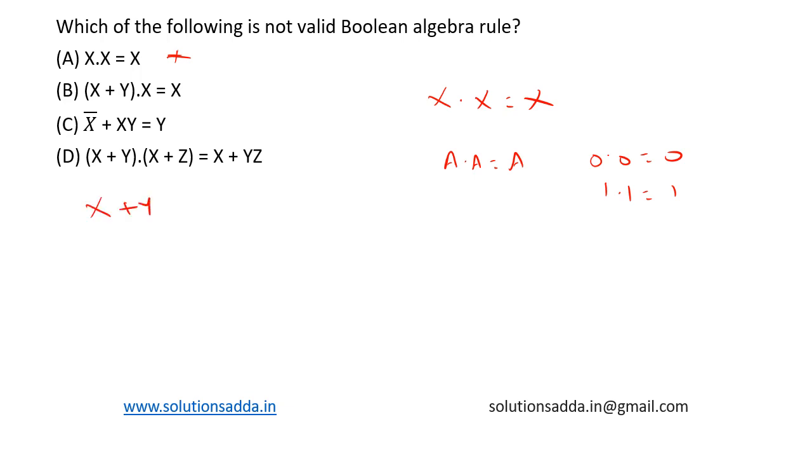Second option is X plus Y into X is equal to X. Let's try to solve it. Multiplying with X: X plus XY. Taking X as common we get X times (1 plus Y). Since 1 plus anything is equal to 1 only, we get X. So LHS is equal to RHS, this is also not the right choice.